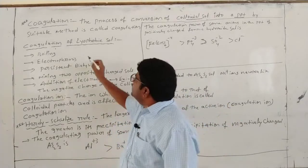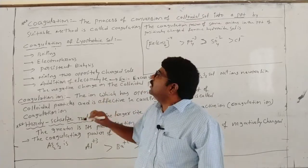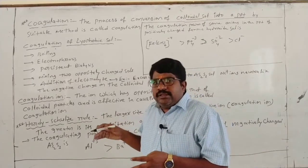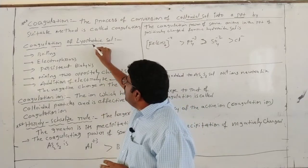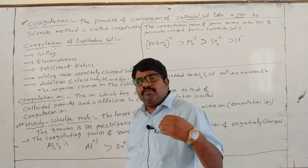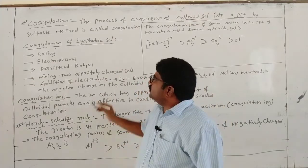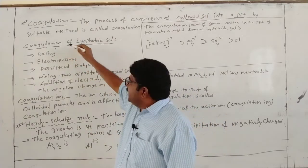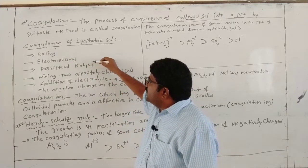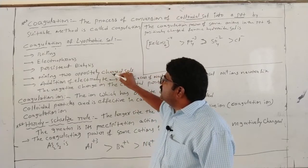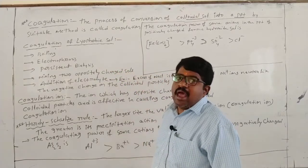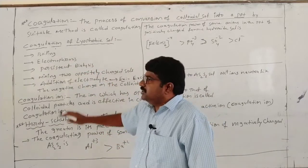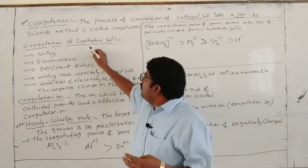The two types are lyophilic salts and lyophobic salts. How is coagulation formed in lyophobic salts? The five methods for coagulation of lyophobic salts are: boiling method, electrophoresis, persistent dialysis, mixing of oppositely charged salts, and addition of electrolytes.